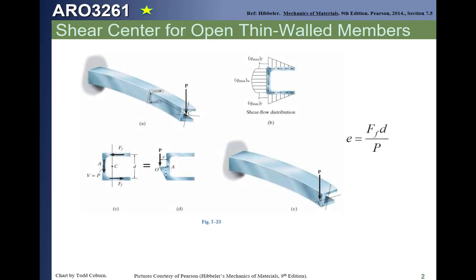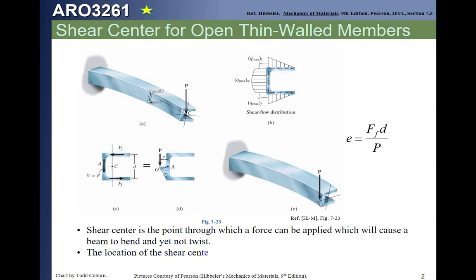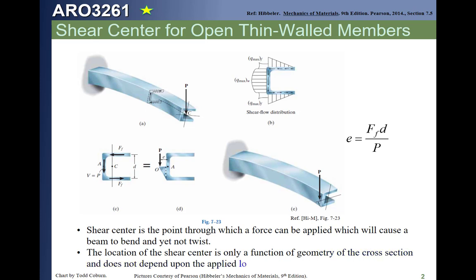If you imagine a C-channel being loaded with a transverse shear, that C-channel, if you load it up roughly through the centroid, will twist under the loading as shown in figure A. If we look closer at the cross section, we see the section looks something like this.